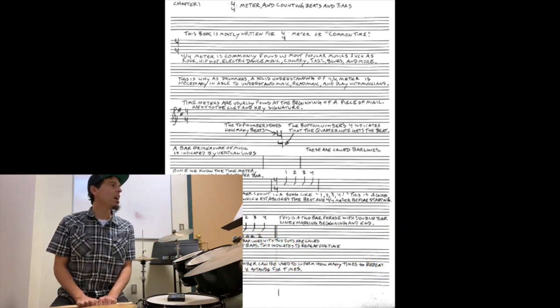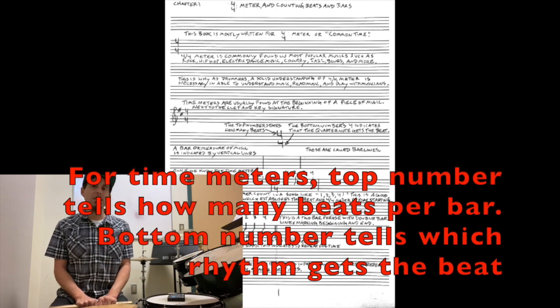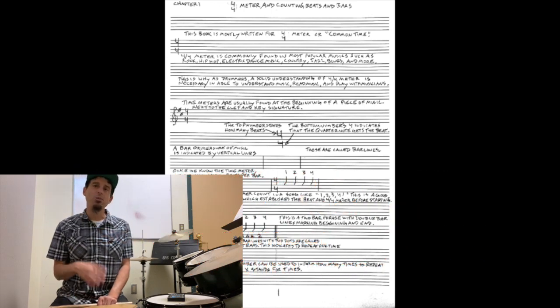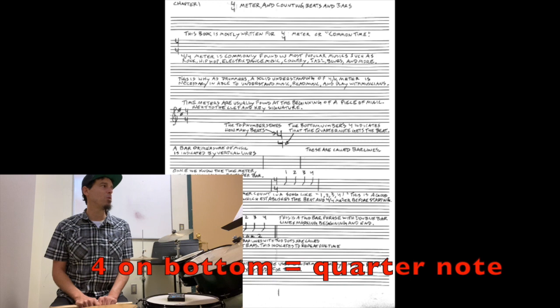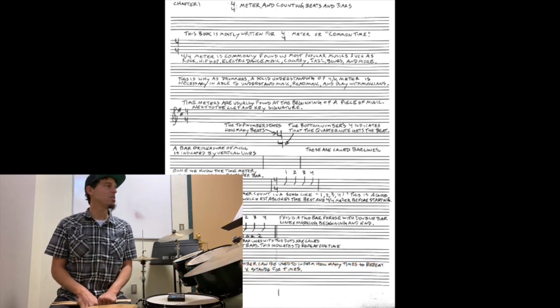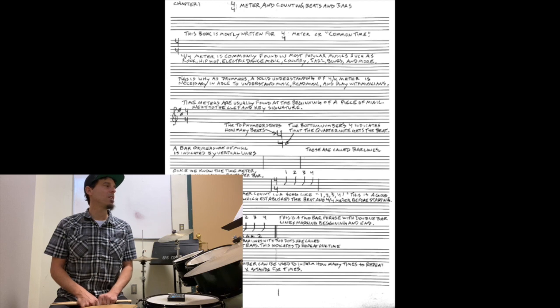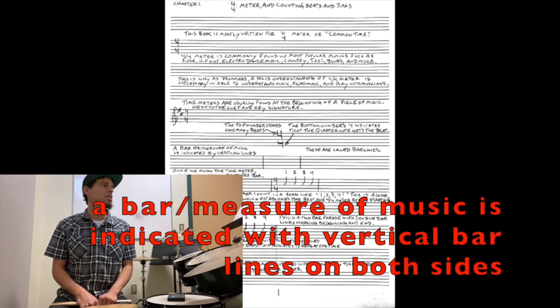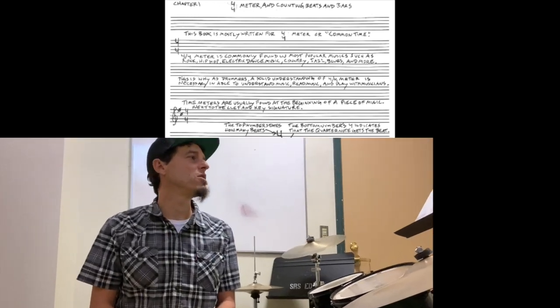Okay, now the top number, that top 4, is telling us how many beats in a bar, and the bottom number is telling us which note gets the beat. So a 4 stands for quarter note. That means we're counting with quarter notes. Now a bar of music is also called a measure, and it's indicated with vertical lines. So if you see those two bar lines right there, right in the middle of those would be the actual bar or measure of music.